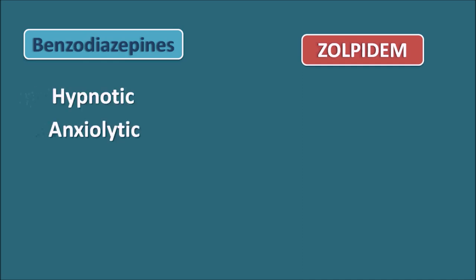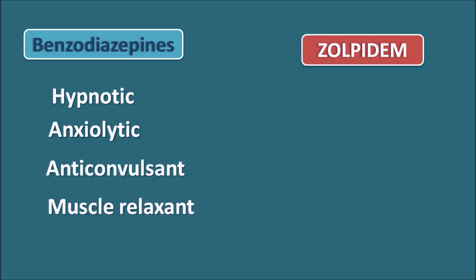Because benzodiazepines act on both benzodiazepine-1 and benzodiazepine-2 receptors, they produce hypnotic, anxiolytic, anticonvulsant, and muscle relaxant effects. But Zolpidem mainly shows the hypnotic effect with only little anticonvulsant and muscle relaxant activity. That is why Zolpidem is used for the short-term treatment of insomnia — because it mainly produces the hypnotic effect with minimal muscle relaxation and anticonvulsant effects.